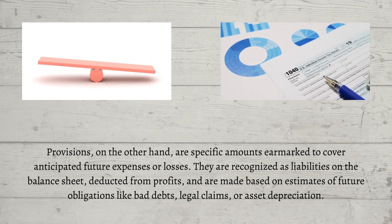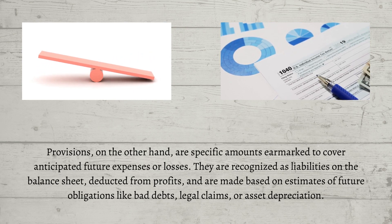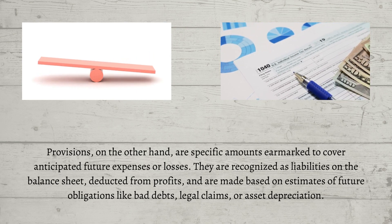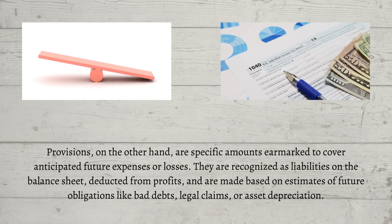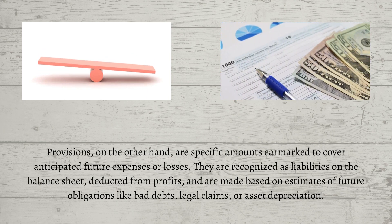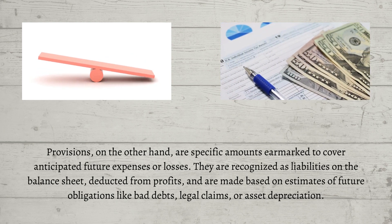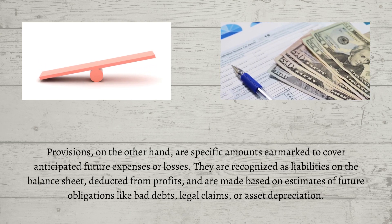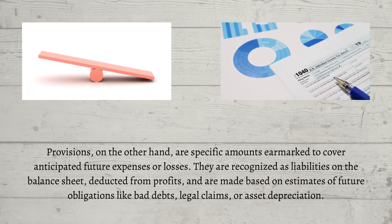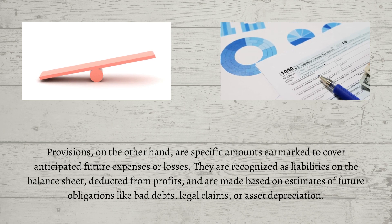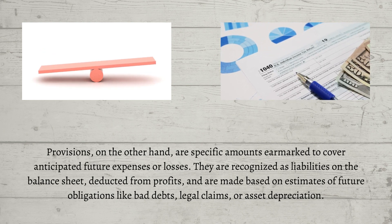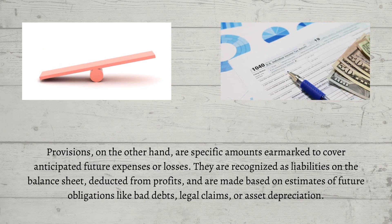Provisions, on the other hand, are specific amounts earmarked to cover anticipated future expenses or losses. They are recognized as liabilities on the balance sheet, deducted from profits, and are made based on estimates of future obligations like bad debts, legal claims, or asset depreciation.